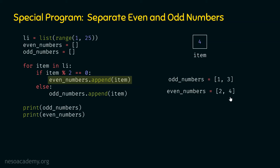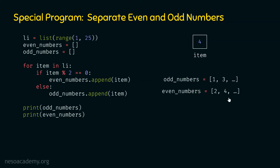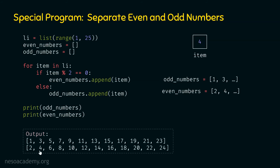We can continue this process and eventually all odd numbers will be in the odd numbers list and all even numbers will be in the even numbers list. The output of this program is: odd numbers list — 1, 3, 5, 7, 9, 11, 13, 15, 17, 19, 21, 23 — followed by the even numbers list starting from 2 and going up to 24. In this way, we can separate even and odd numbers in Python.